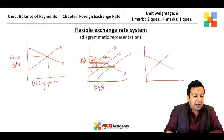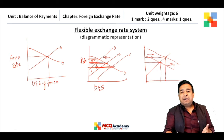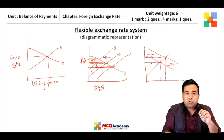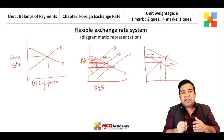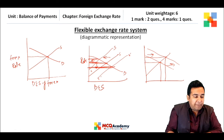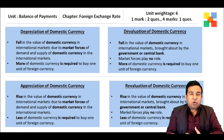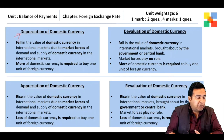For change in demand: an increase in demand is represented by a rightward shift in the demand curve, causing a rise in the foreign exchange rate — you need more rupees to buy one unit of dollar. A decrease in demand is represented by a leftward shift, resulting in a fall in the foreign exchange rate in our country.